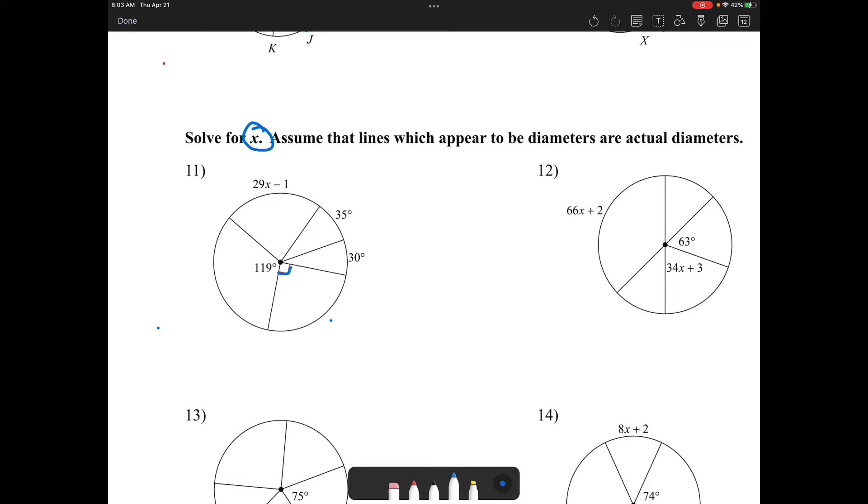In problem number 11, we're asked to simply find X. So how could we find X? Well, we need to find the measure of this angle or the measure of that arc. And what we know is that this arc measure would be 360 minus the remaining arcs. This little red in the middle indicates that this is 90 degrees, so that means the arc would be 360 minus 119 minus 90 minus 30 minus 35. So 360 minus 119 minus 90 minus 30 minus 35 equals 86. So that means this measure is 86, indicating that 29X minus 1 equals 86. So 29X is equal to 87.